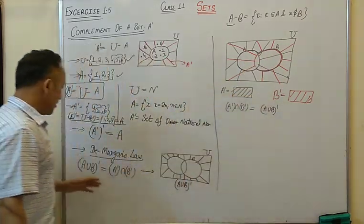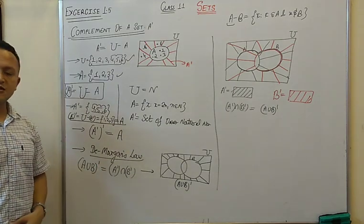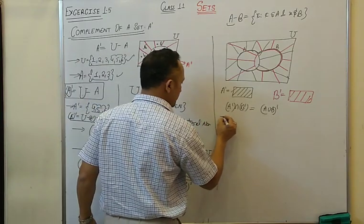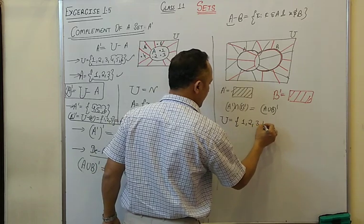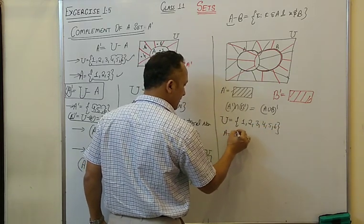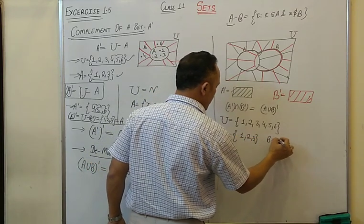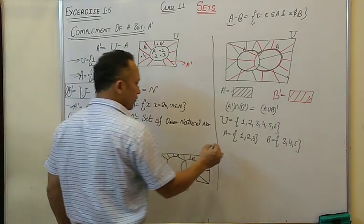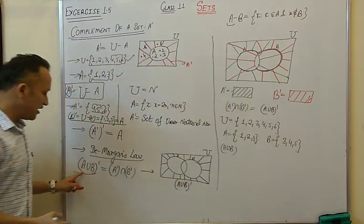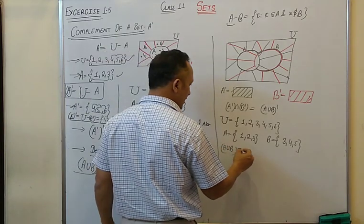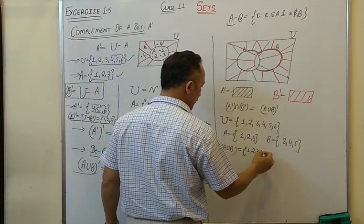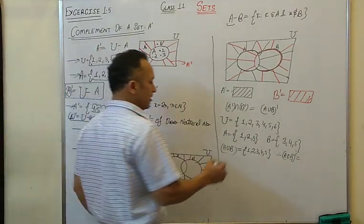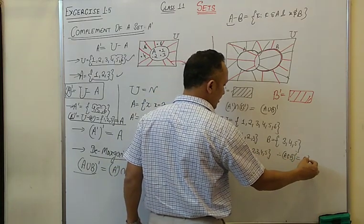This is how De Morgan's Law is proved through the Venn diagram. You can also verify it with a simple numerical example. Let's say Universal = {1,2,3,4,5,6}, set A = {1,2,3}, and set B = {3,4,5}.